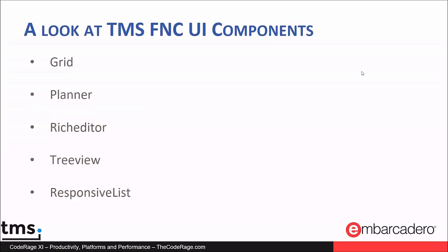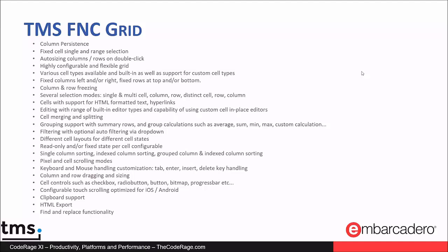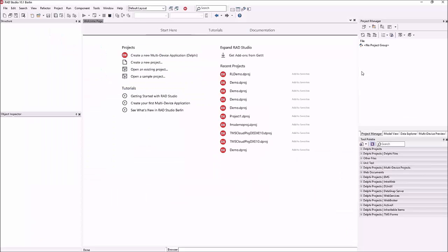To close the session, I want to briefly look at a set of controls built on top of the FNC abstraction layer — controls you can use in both VCL and FMX. We'll look at a grid control, a planner or scheduler control, a rich editor, a tree view, and a responsive list. Here is our FNC grid with an overview of its most important features — let's open up a demo of this grid control.